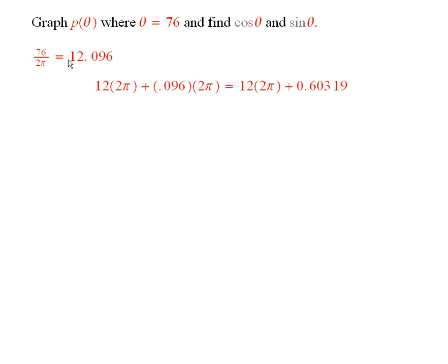So if we do the division, we get 12.096, and therefore this number here, theta 76, is equal to 12 times 2π plus 0.096 times 2π.